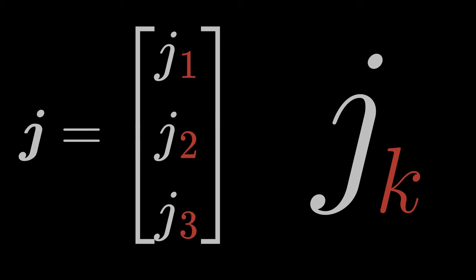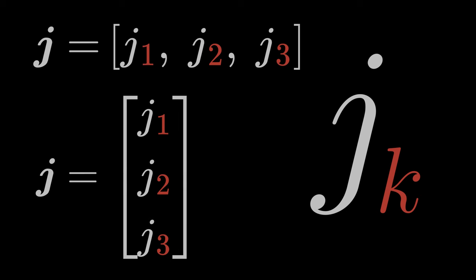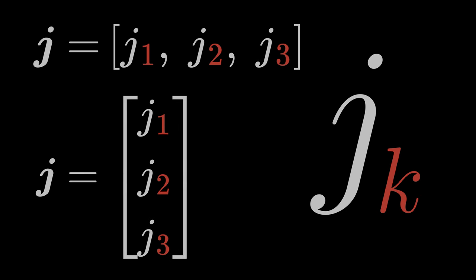It is not clear from this index notation, JK, whether it represents a column or row vector. This is not good, because later it will be important to distinguish between column and row vectors. But we can easily introduce this distinction into our index notation by noting the index below if we mean a row vector, and we notate the index above if we mean a column vector.